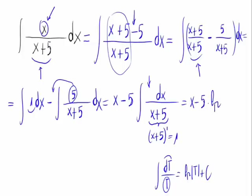So we would have x minus 5 times the Neperian logarithm of the absolute value of (x plus 5) plus c. This is because we have the derivative of the denominator in the numerator. This would be the answer to the initial operation.